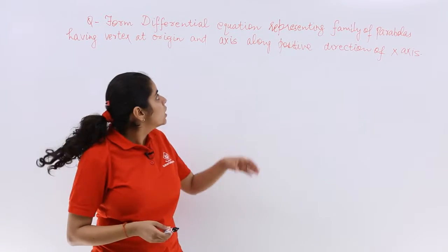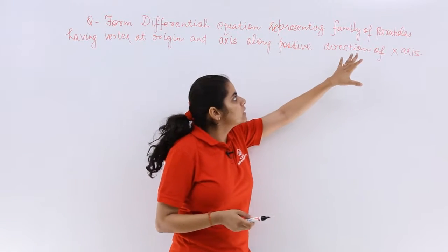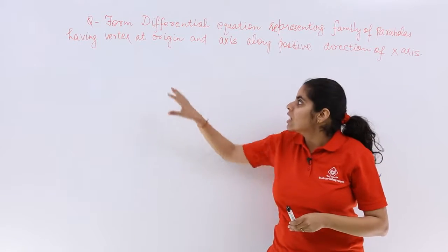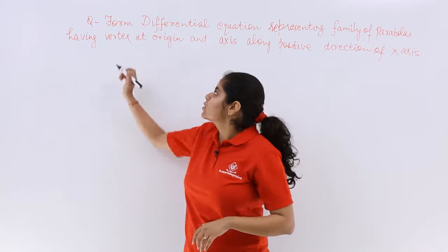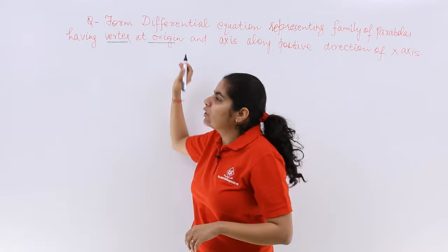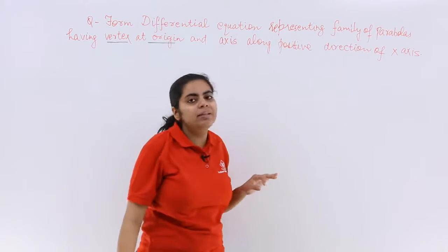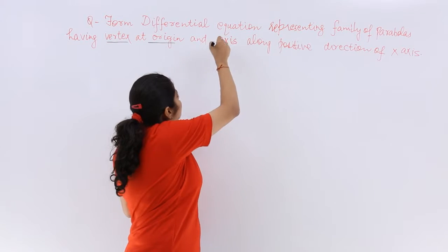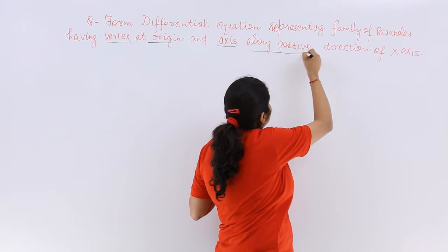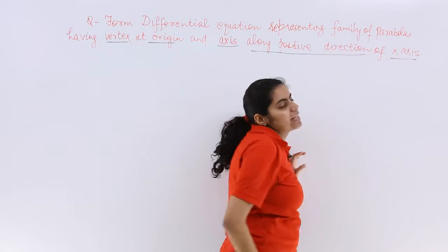Let's see this question. It says form the differential equation representing the family of parabolas having the vertex at origin. So first information: vertex at origin and axis is along the positive direction of the x-axis. That means the axis is along the positive direction of x-axis.